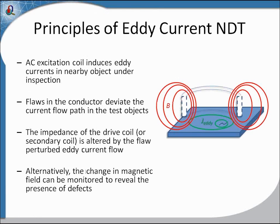Some of the principles of eddy current non-destructive testing: we have an AC excitation coil that induces eddy currents in a nearby object under inspection. I've drawn a little schematic — this is a circular excitation coil, and the AC magnetic field is denoted by the red lines here. The current induced in the sample is denoted by the green line, and this represents the perturbation of eddy current by a flaw. Usually we'll have a drive coil and also a secondary coil to pick up the flaw response.